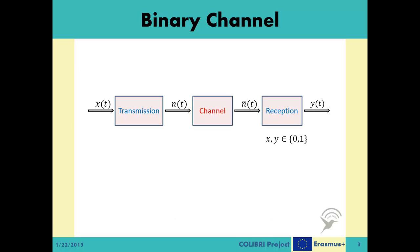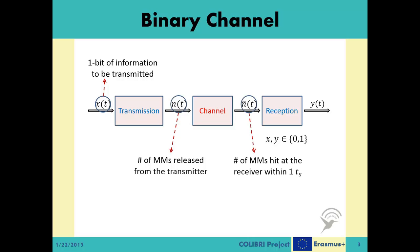Here we define the four time varying intermediate parameters of the communication model as Xt, the one bit information to be transmitted, Nt, the number of messenger molecules released from the transmitter,